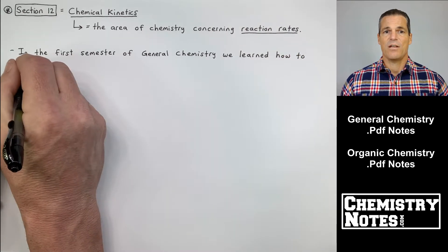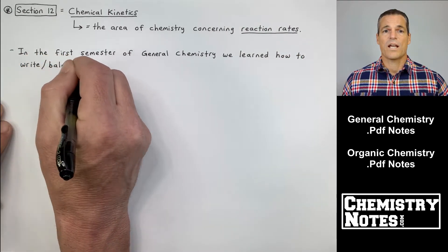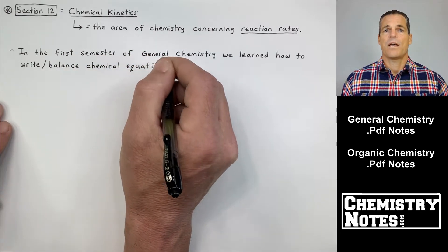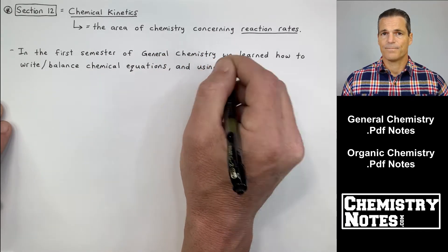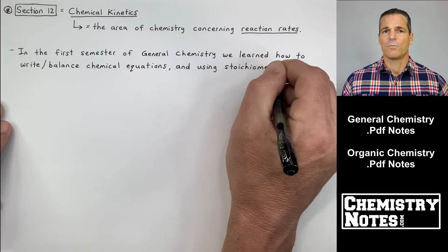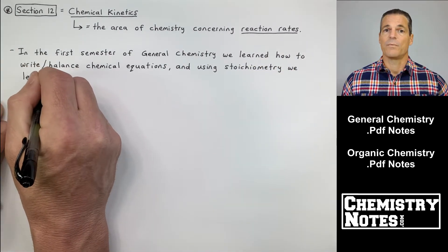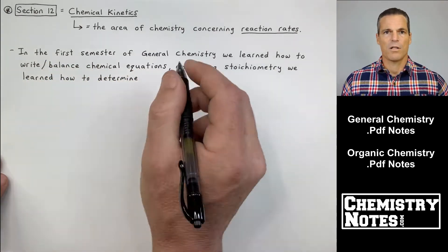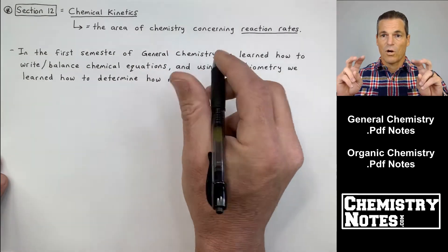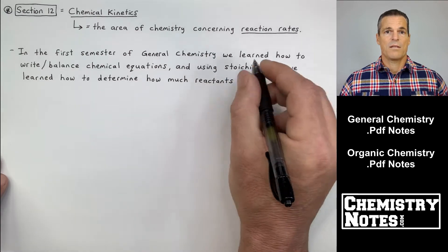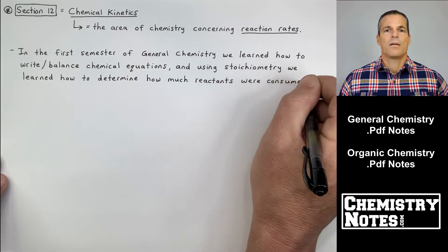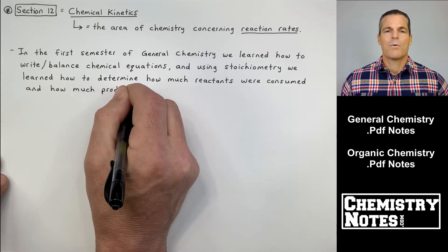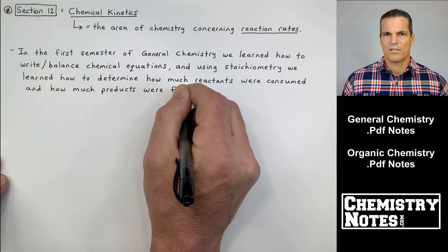Chemical kinetics is defined as the area of chemistry concerning reaction rates. In the first semester of general chemistry we learned how to write and balance chemical equations, and then we learned stoichiometry — going from mass to moles, moles to mass, mass to molecules, moles to molecules, etc. But we never discussed how fast those reactions occurred.